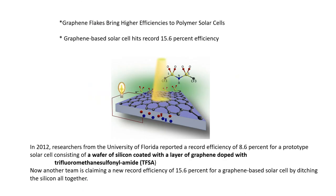In recent years, graphene-based solar cells have been reported to furnish a greater efficiency of 15.6%. A wafer of silicon coated with a layer of graphene doped with trifluoromethane sulfonyl amide has been tested. In 2012, researchers from the University of Florida reported a record of 8.6% efficiency for a prototype solar cell using this configuration. Another team claimed a new record efficiency of 15.6% for a graphene-based solar cell by ditching silicon altogether.